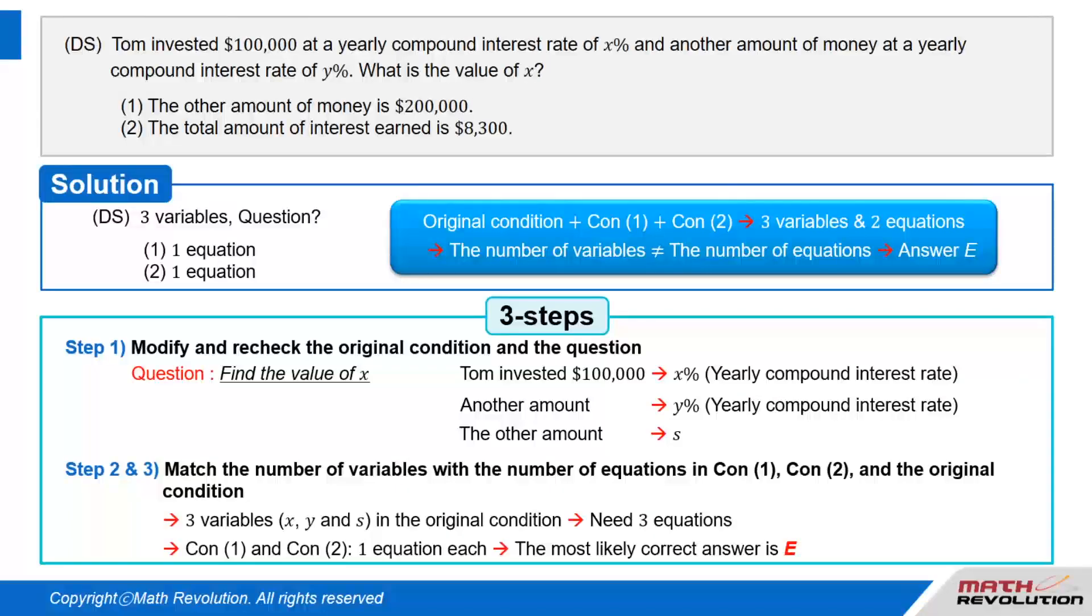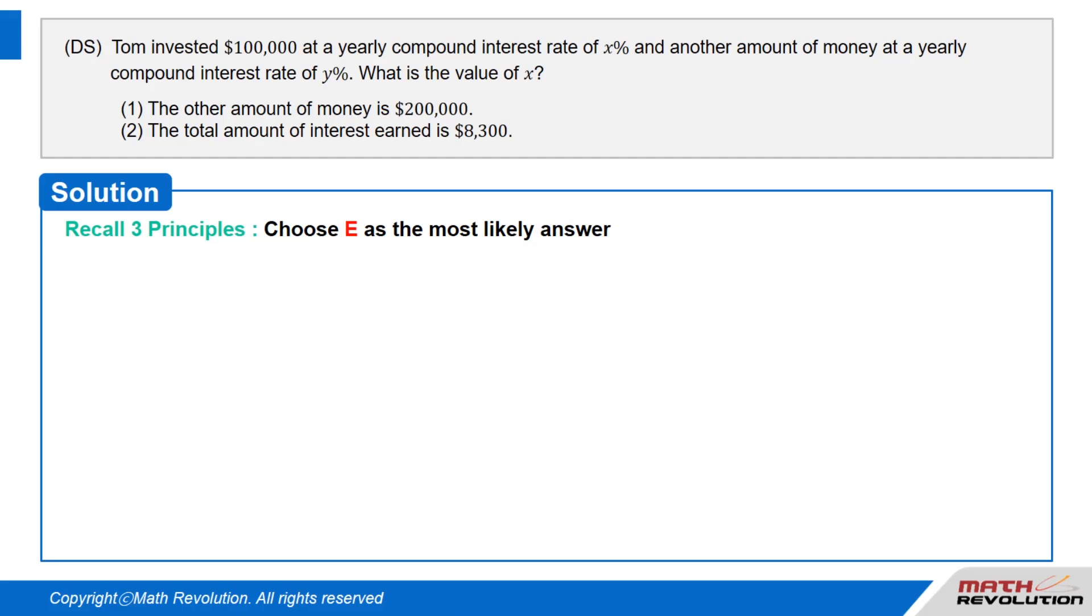Follow the second and third step. From the original condition, we have three variables: X, Y, and S. To match the number of variables with the number of equations, we need three equations. Since conditions 1 and 2 will provide one equation each, E would most likely be the answer. Recall three principles and choose E as the most likely answer.